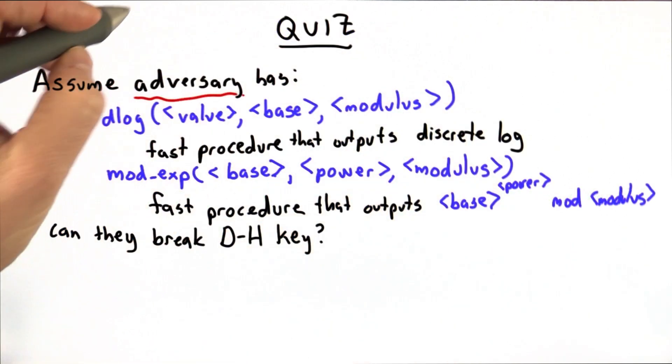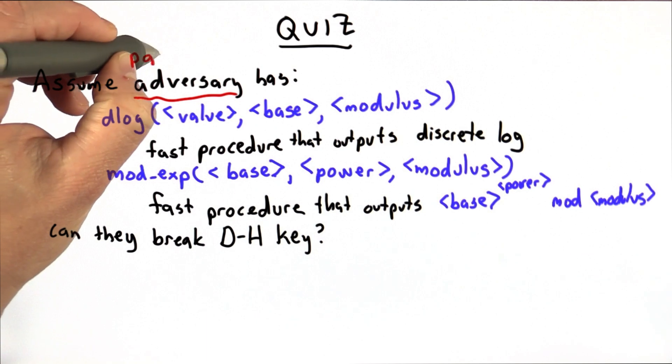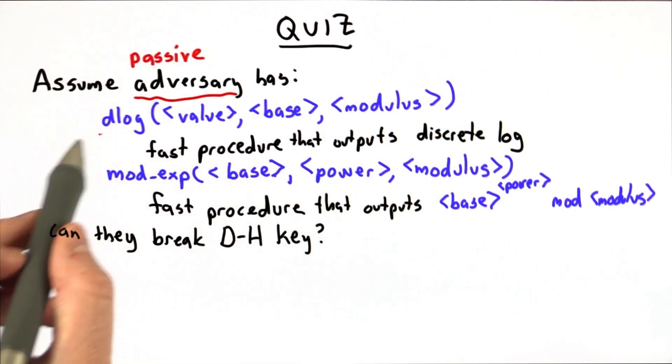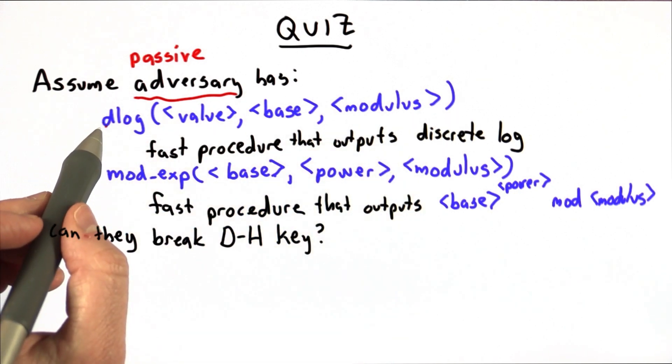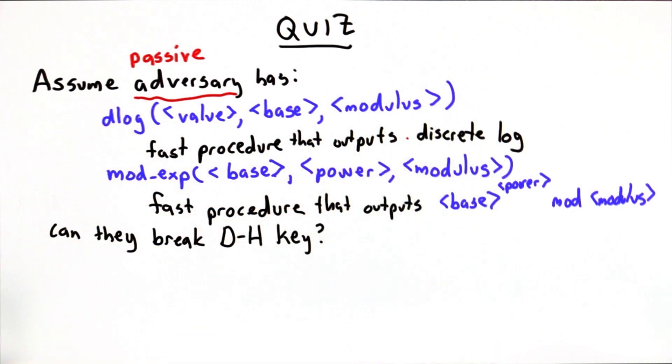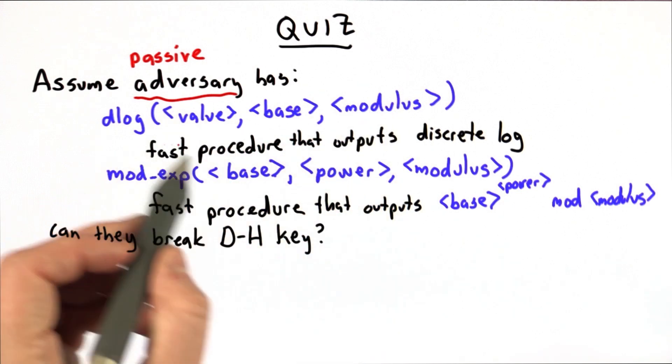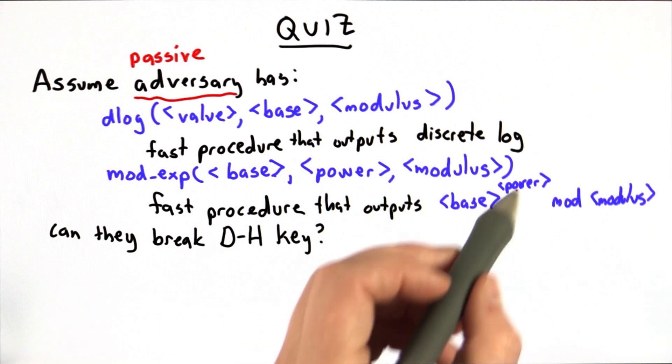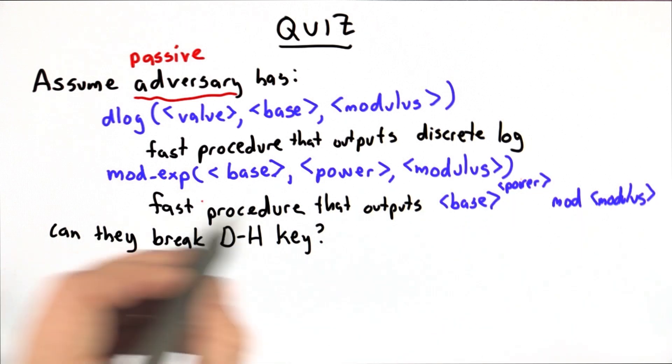we'll assume that we have an adversary that's passive. So all they can do is eavesdrop on the messages. But they also have access to a powerful computing resource. They have a procedure dlog that is a fast procedure for computing discrete logs that works on any inputs. And they have modular exponentiation, a fast procedure that outputs base to the power mod modulus.